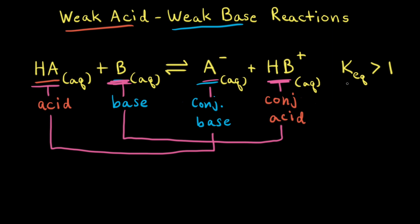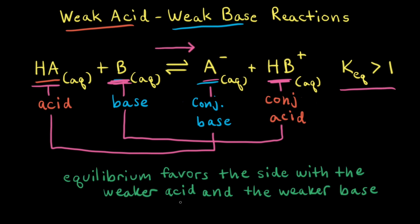Let's look at the situation where the equilibrium constant for this reaction is greater than one. If K is greater than one, that means at equilibrium there are more products than reactants. Therefore, the equilibrium favors the formation of the products.